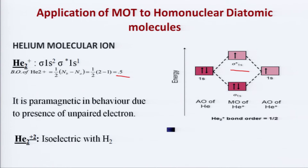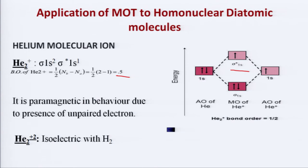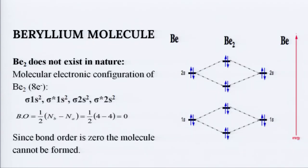He2²⁺ — that means with the loss of 2 electrons — becomes exactly similar to the hydrogen molecule, and that is why it is said that this particular molecular ion is isoelectronic to hydrogen. Now let us have a look at beryllium. Moving along with the periodic table, each beryllium atom has 4 electrons. So Be2 has 8 electrons. When we distribute these 8 electrons according to MOT, the electronic configuration is: sigma 1s², sigma star 1s², sigma 2s², sigma star 2s².